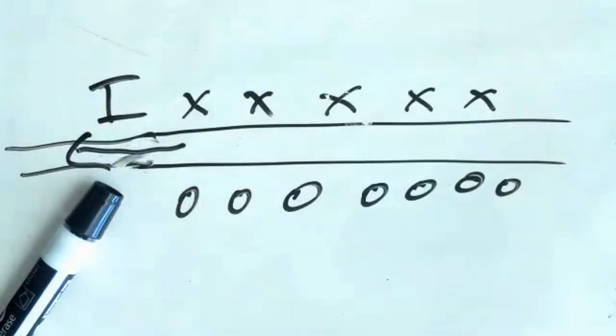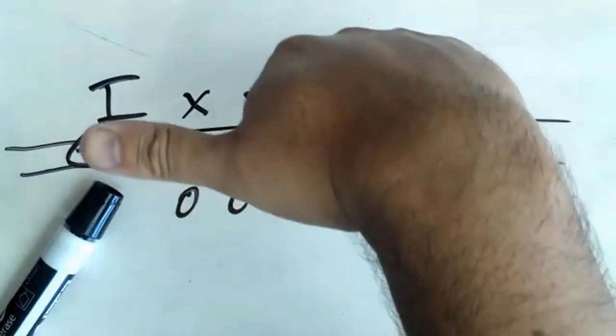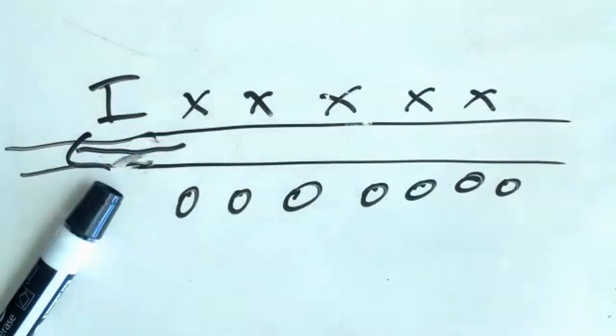And that's the right-hand rule used backwards — they give you the magnetic field and you figure out the current direction.